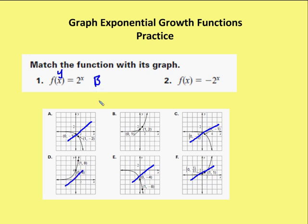The way I figure this out is I identify the input values and their relative output values. I put in 0, I get out 1. I put in 1 and I get out 2. And I can see that those two coordinates match up with b. I'm going to do the same thing for number 2.